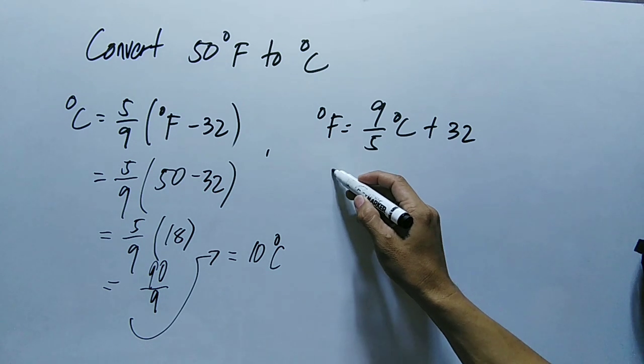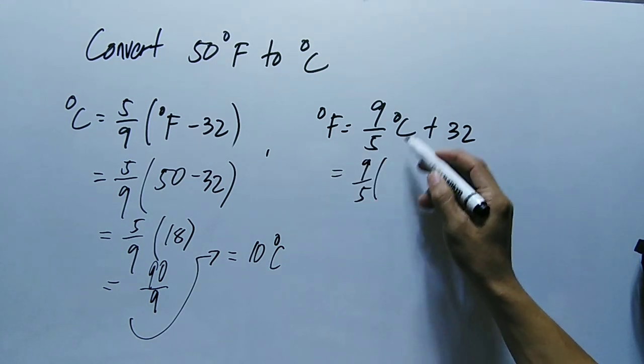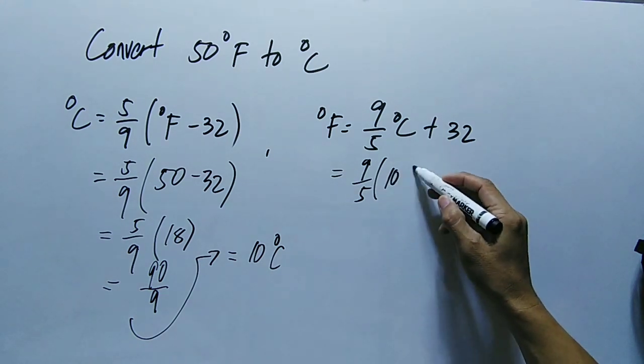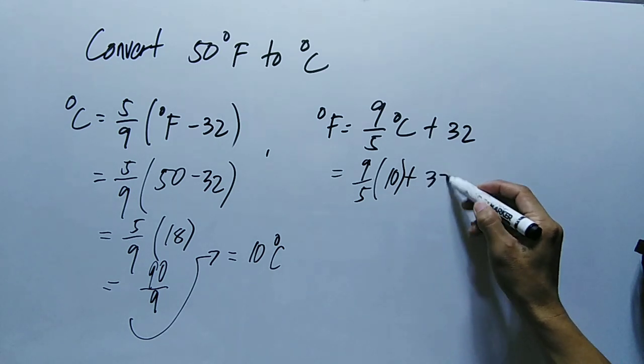So degree Fahrenheit is equal to 9 over 5 times the value of degree Celsius, which is 10, plus 32.